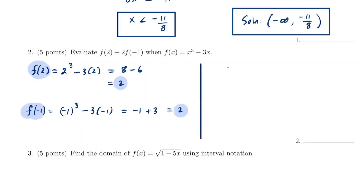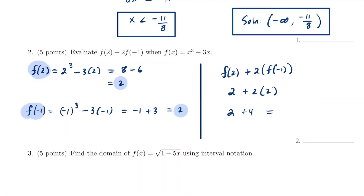Now we plug into the formula f(2) plus 2 times f(−1). That's 2 plus 2 times 2, which is 2 plus 4, equaling 6. So this function evaluates to 6.